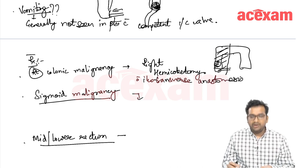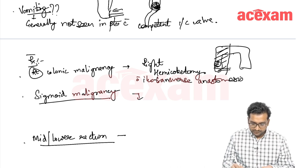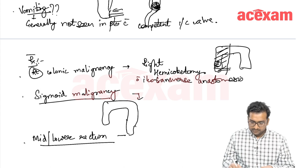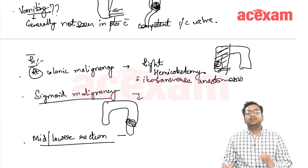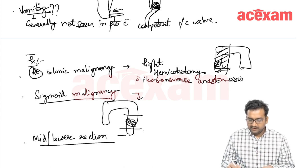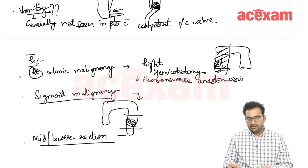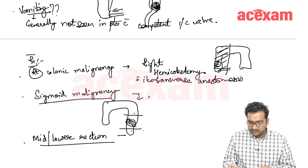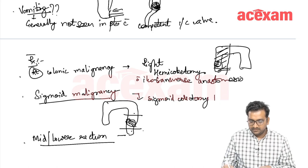In sigmoid malignancy, we have two options. We resect the sigmoid, and either we can anastomose the descending colon to the rectum — this will be sigmoid colectomy with colorectal anastomosis — or we can do the Hartmann procedure.